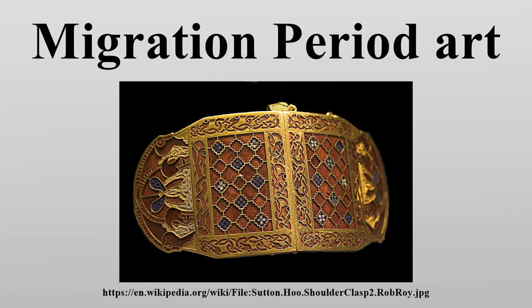In the 3rd century the Roman Empire almost collapsed and its army was becoming increasingly Germanic in makeup, so that in the 4th century when Huns pushed Germanic tribes westward, they spilled across the empire's borders and began to settle there. The Visigoths settled in Italy and then Spain, in the north the Franks settled into Gaul and western Germany, and in the 5th century Scandinavians such as the Angles, Saxons and Jutes invaded Britain. By the close of the 6th century the Western Roman Empire was almost completely replaced with smaller, less politically organized, but vigorous Germanic kingdoms.